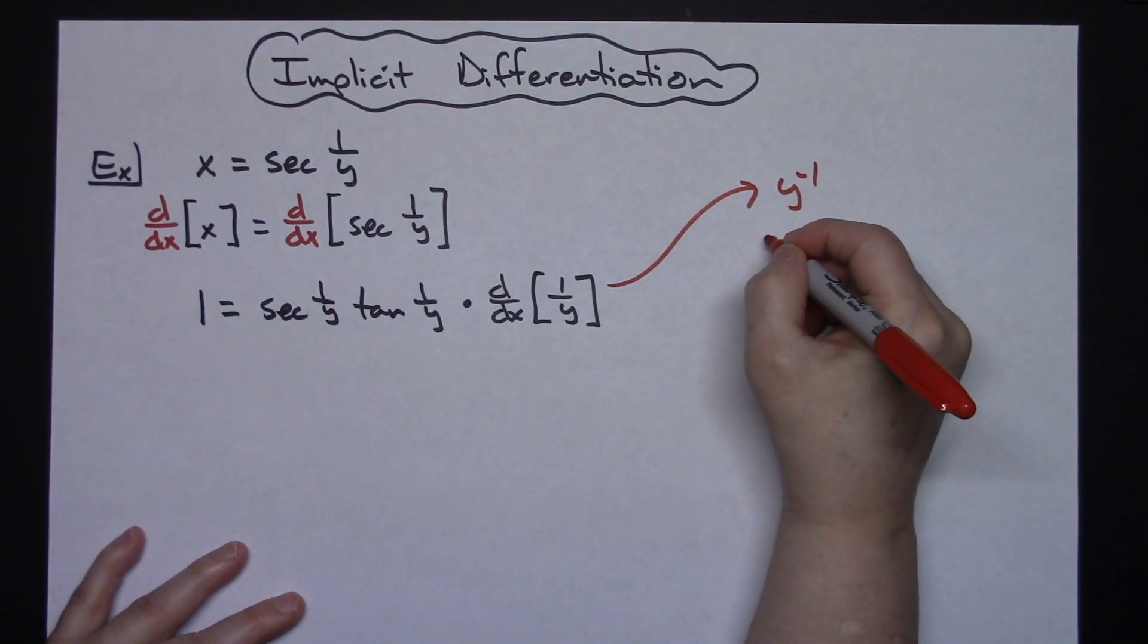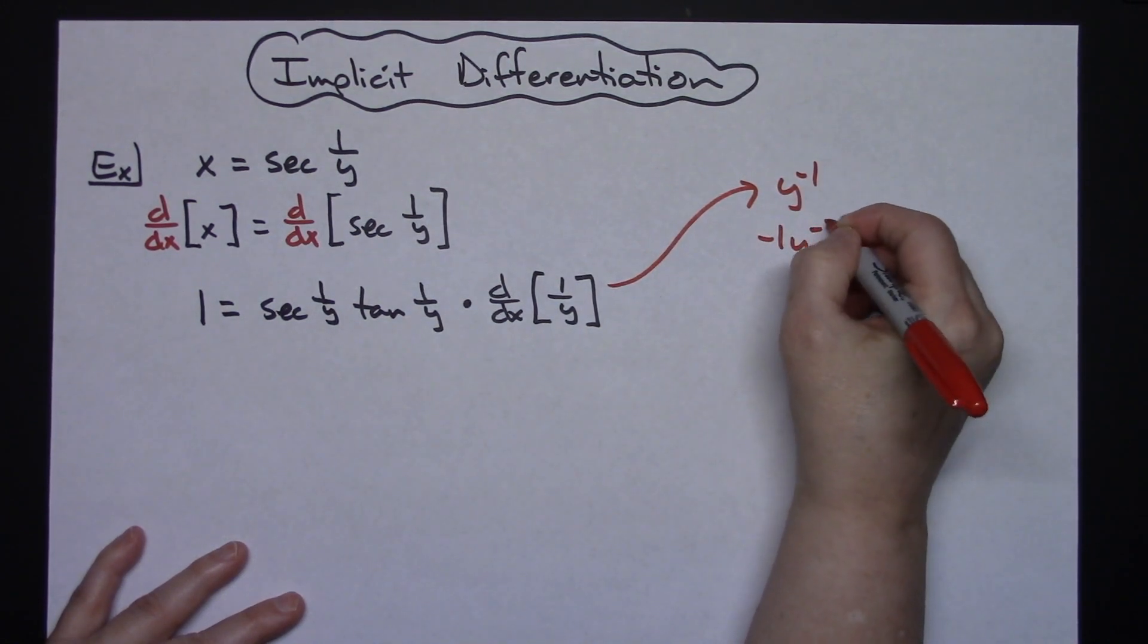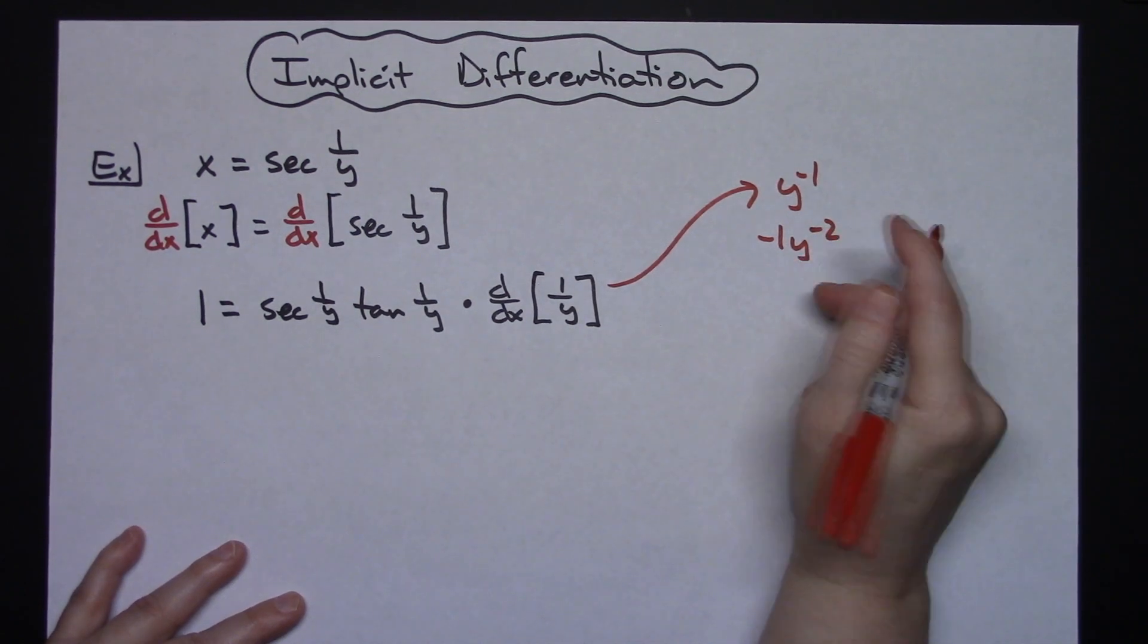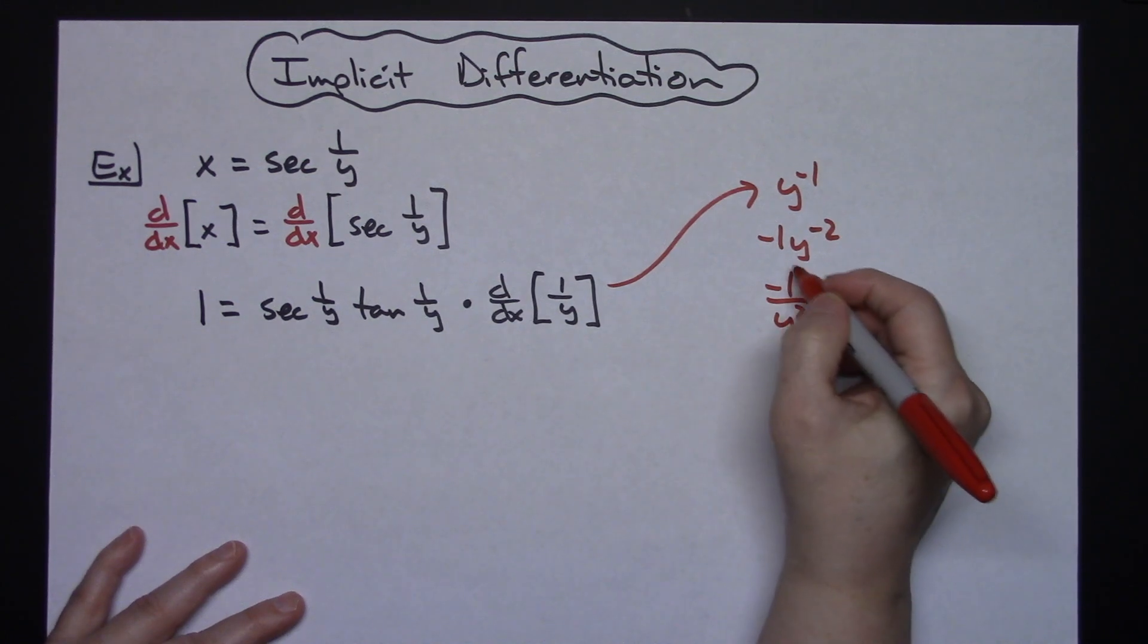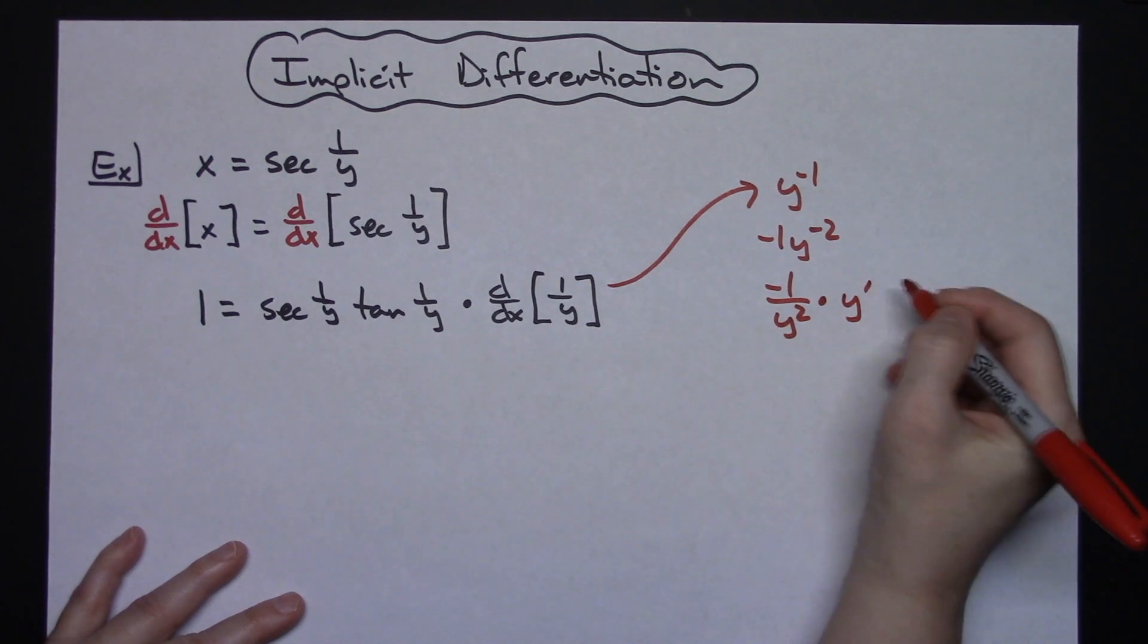Taking the derivative there I'm going to have a negative 1 y to the negative 2 move that back down to the denominator so negative 1 over y squared and since I am taking a derivative here with the y then I'm going to have to have that y prime in there.